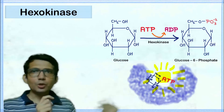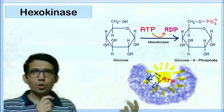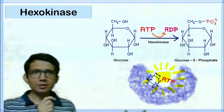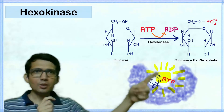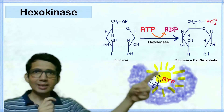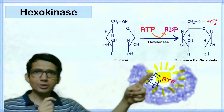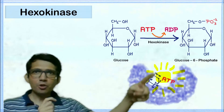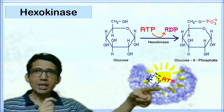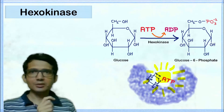Once glucose and ATP are close to one another, the hydroxyl group at the sixth carbon atom of glucose reacts with the phosphate of ATP to form the final product.